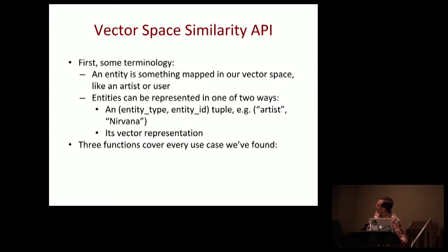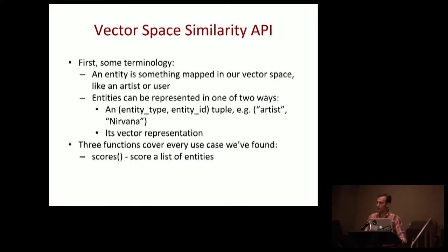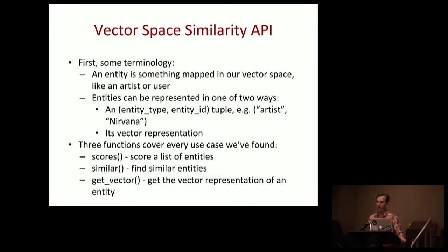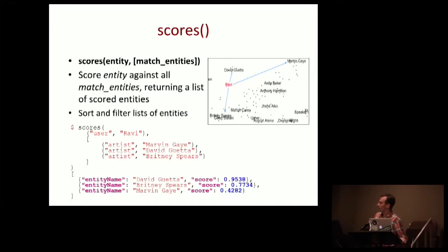The API enables three functions that cover every use case when manipulating this vector space. Scores takes a candidate list and scores it against an entity of interest. Similar is a simple nearest neighbors function. Get vector pulls the vector representation for an entity so we can manipulate it and feed it back into either scores or similar.